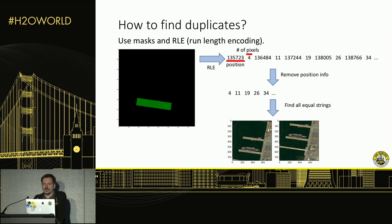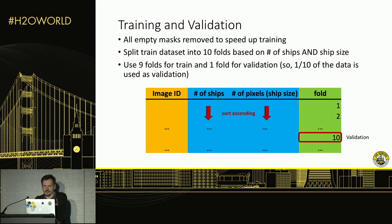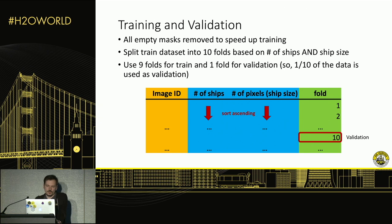Now we're able to identify all the same pictures — we group them together and split our data into different folds for training and validation. We decided to remove all empty masks from the train set completely, thinking it could help increase training speed. We also split the training dataset into ten folds based on the number of ships and ship size, sorting by number of ships and number of pixels in ascending order. We used fold ten as validation and folds one through nine as the training set.